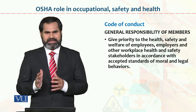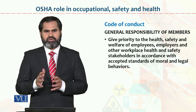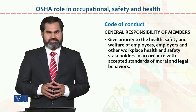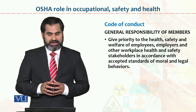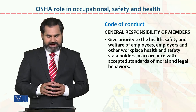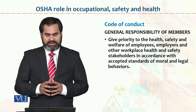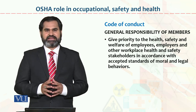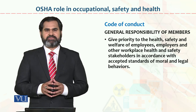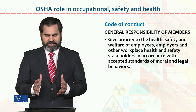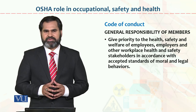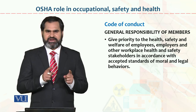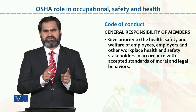ये basically code of conduct है. Member بن گئے, membership مل گئی, training ہو گئی — اب ان کی responsibilities کیا ہیں member کی? Give priority to the health, safety, welfare of employees, employer and other workplace health and safety stakeholders in accordance with accepted standards of moral and legal behavior. اس طرح کا environment create کریں کہ employer اور employee مل کر ایک relationship develop کریں، جو کہ ایک family کا relationship ہو، تاکہ ہر employee اپنی responsibility feel کرے — I have to perform the task. اور یہ وہ tasks ہوں گے جن کی training آپ کو Occupational Safety Health Association کی طرف سے ملی ہوگی.